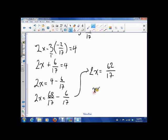So that means x is 62 over 17 divided by 2 or times 1 half. Because remember, dividing by 2 is the same as multiplying by 1 half. So that means x is, once we do all our reducing and everything, is 31 over 17. So that means that our solution is 31 over 17 comma negative 2 over 17.